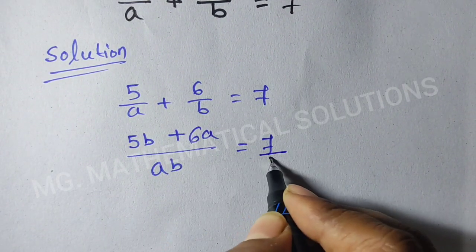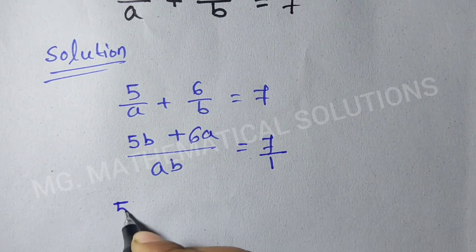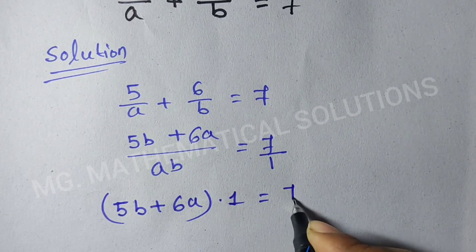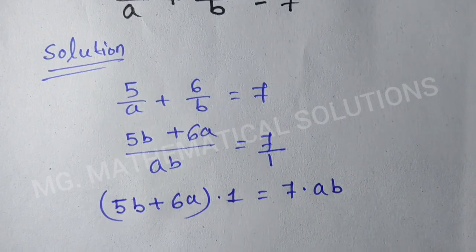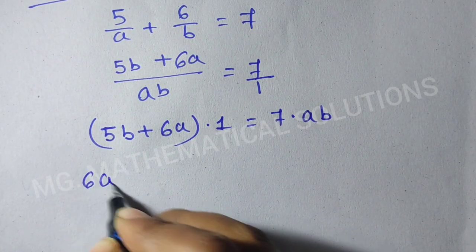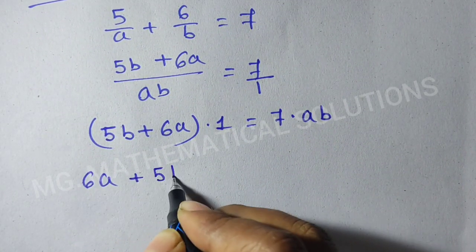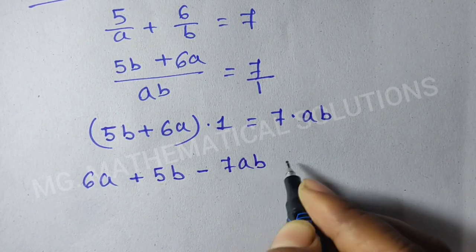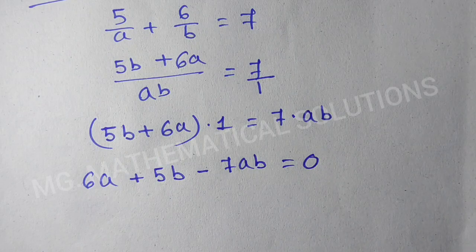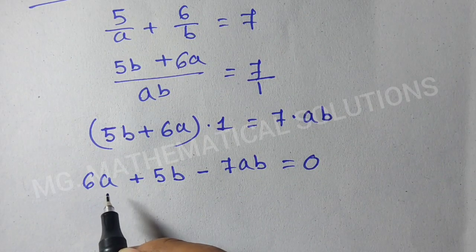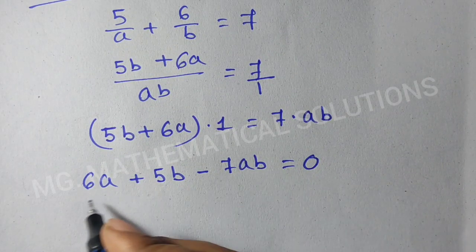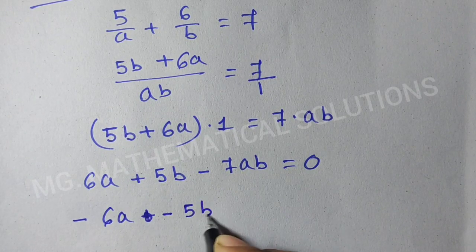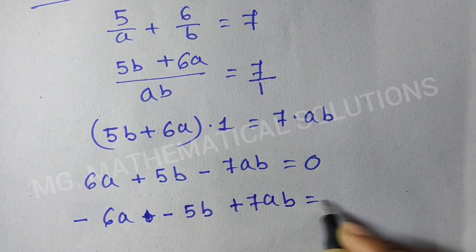Now we cross multiply. So 5B plus 6A times 1 equals 7 times AB. We write 6A plus 5B on the left side, minus 7AB equal to 0. Multiplying both sides by minus 1: minus 6A minus 5B plus 7AB equals 0.